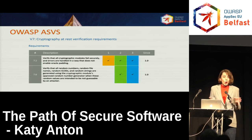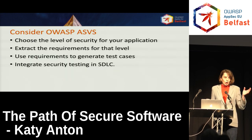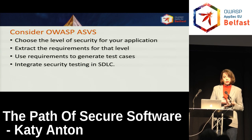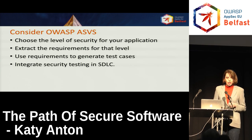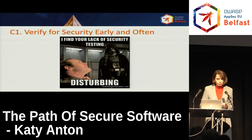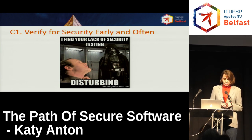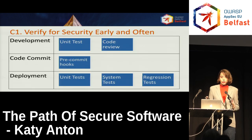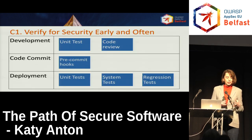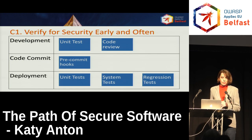We can use OWASP ASVS to choose the appropriate level of security for our application, extract the requirements, and use those requirements to generate test cases that help verify for security early and often. And here is our first control: verify for security early and often — meaning throughout the software development cycle, from the time you write the code, including unit tests and further checks at the code review point.